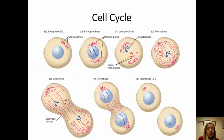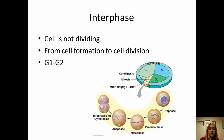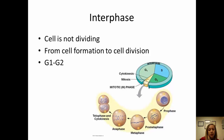The cell cycle is interphase, prophase, metaphase, anaphase, and telophase. Most cells you see in slides are going to be in interphase because it takes up the most time — as you can see in this pie chart, interphase is the largest portion. Then finally we have mitosis, where the cell actually divides and splits off into two daughter cells.